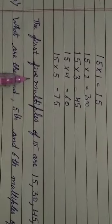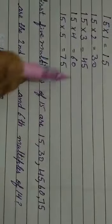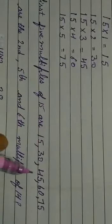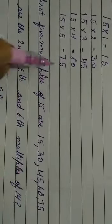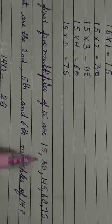The first 5 multiples of 15 are 15, 30, 45, 60, and 75. These are the multiples of 15.